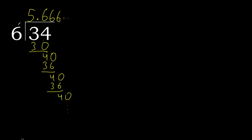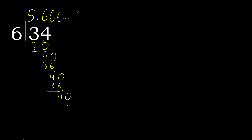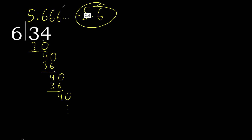34 divided by 6 is this — 5. After the point, 6 repeats: repeat, repeat — like this. The 6 repeats like this, or like this. Repeat.